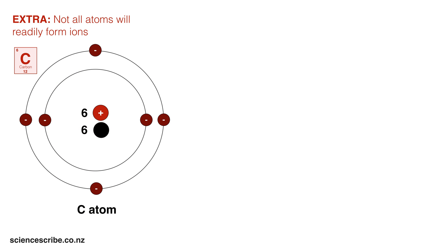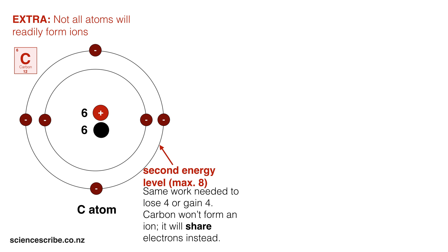Just to wrap things up, note that not all atoms will readily form ions. Let's look at an example with carbon. In the carbon atom, you can see that the outermost energy level already has 4 electrons. Its maximum is 8. So it's not actually going to gain or lose 4 electrons. Carbon will actually prefer to share electrons instead. In doing so, it doesn't form an ion.